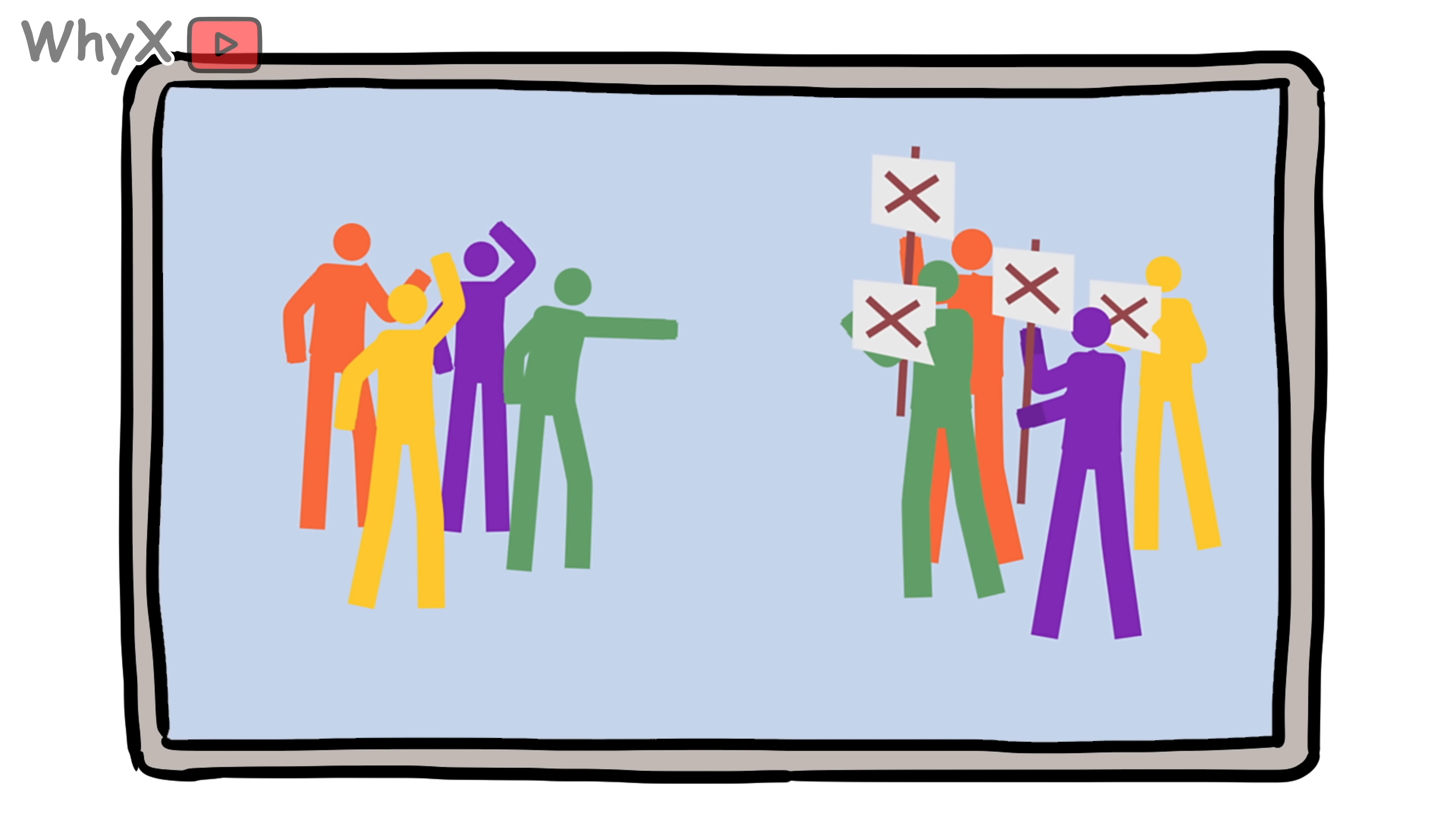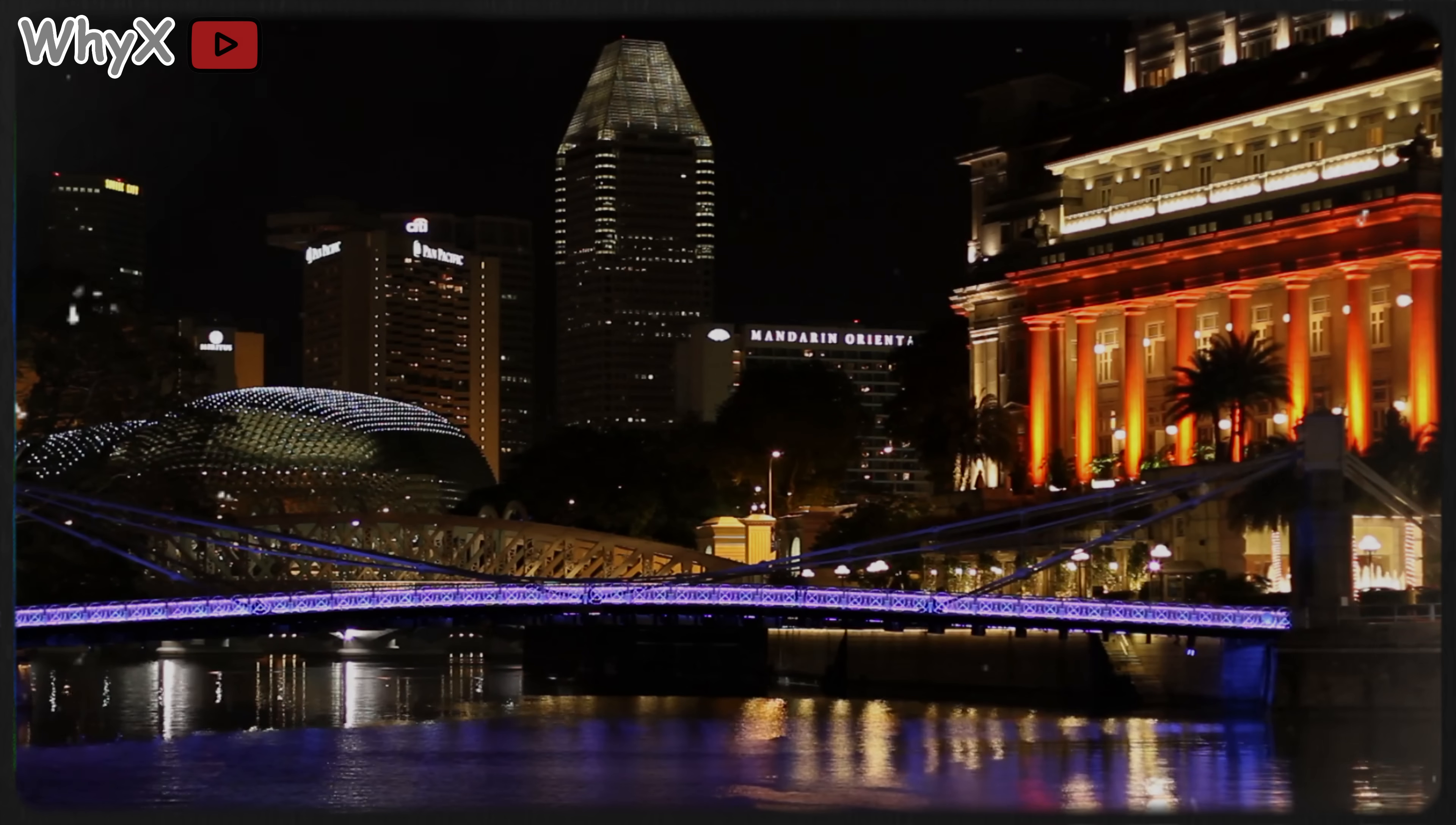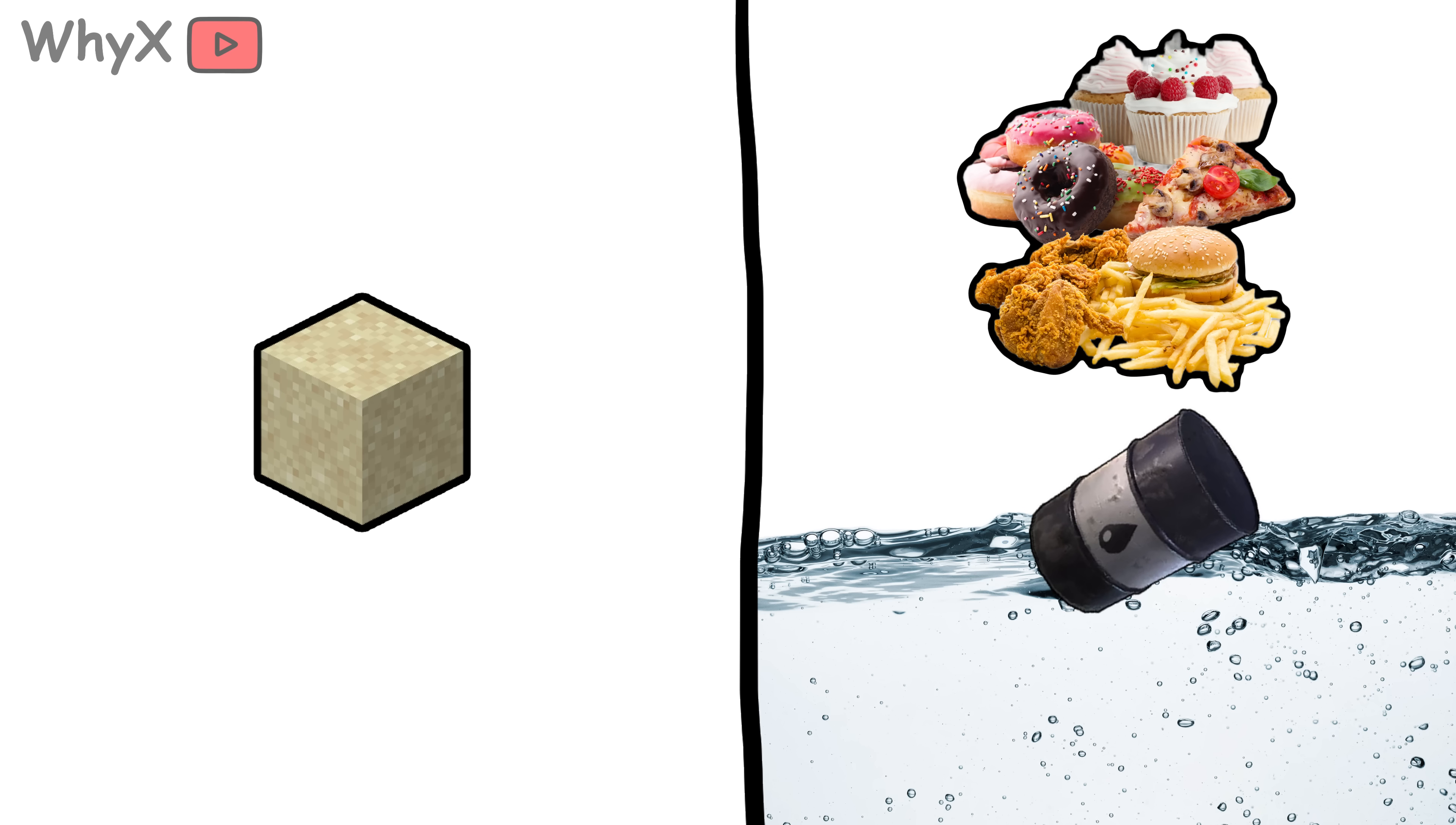Some governments have already taken notice. Indonesia has banned sand exports to protect its coastlines. Singapore, heavily reliant on imported sand, has spent billions on land reclamation and sand stockpiling. India has formed task forces to combat illegal mining, but with limited success. In short, sand is starting to move from construction material into the same category as water, oil and food, things countries fight to secure.